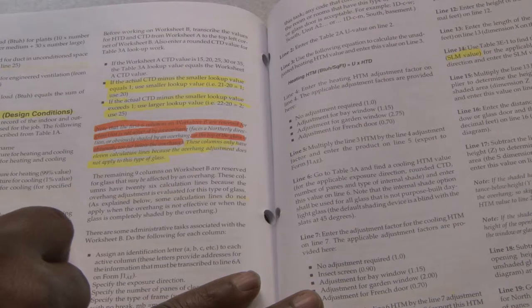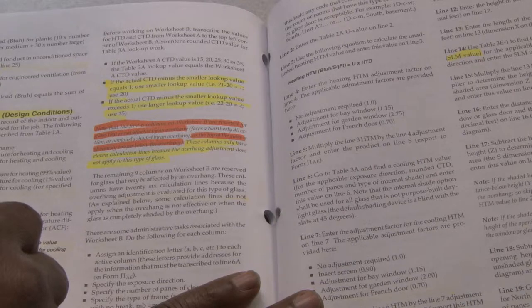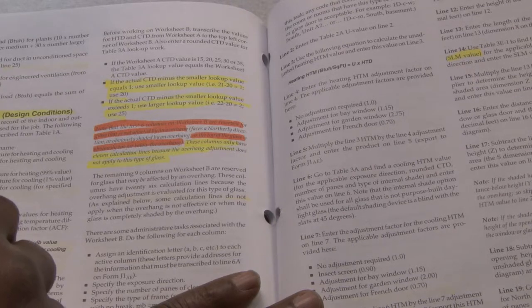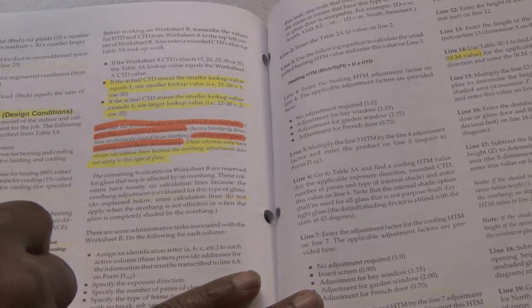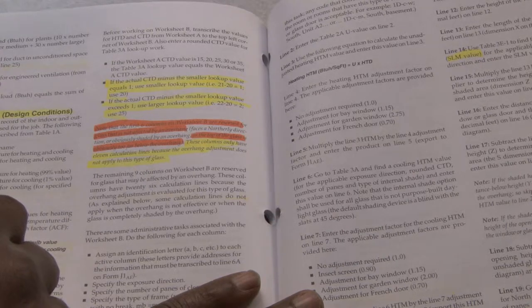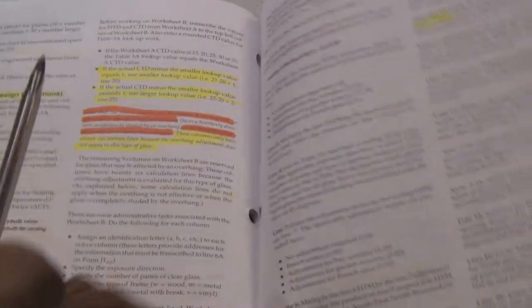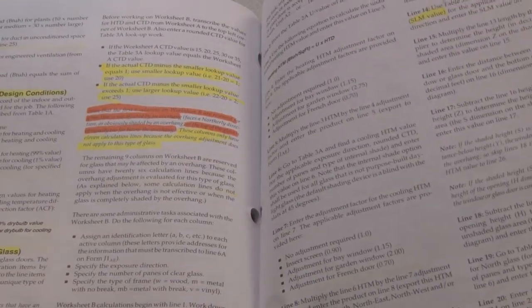The design values for heating temperature difference, which we call the HTM, the heating temperature difference, cooling temperature difference, which is the CTD, and the amplitude correction factor, depending on the height of it, so they have a correction factor.